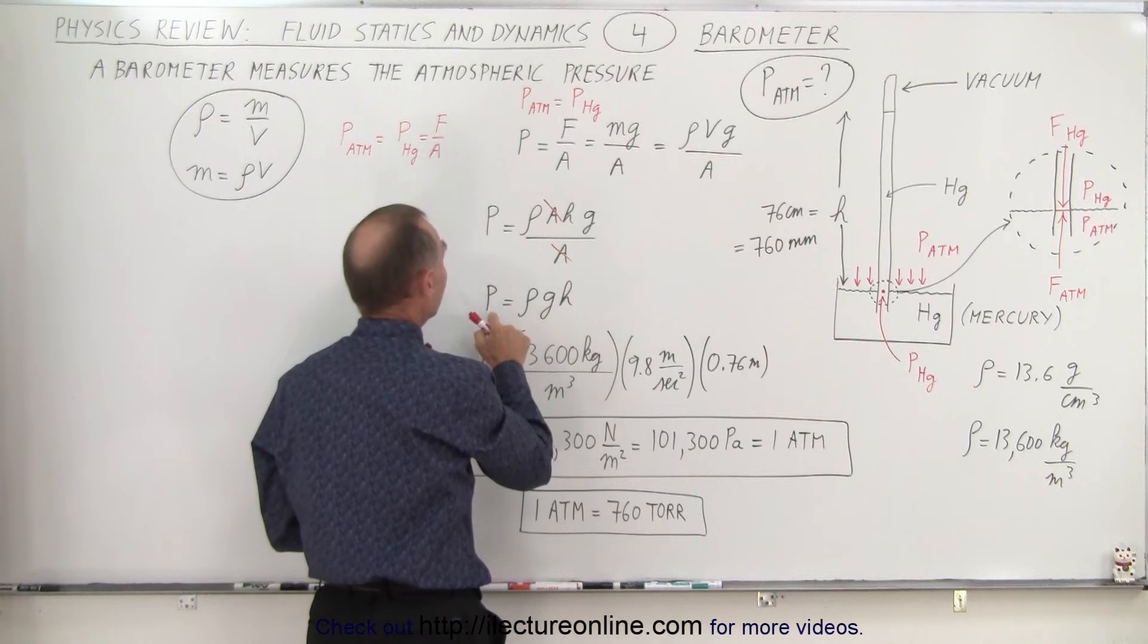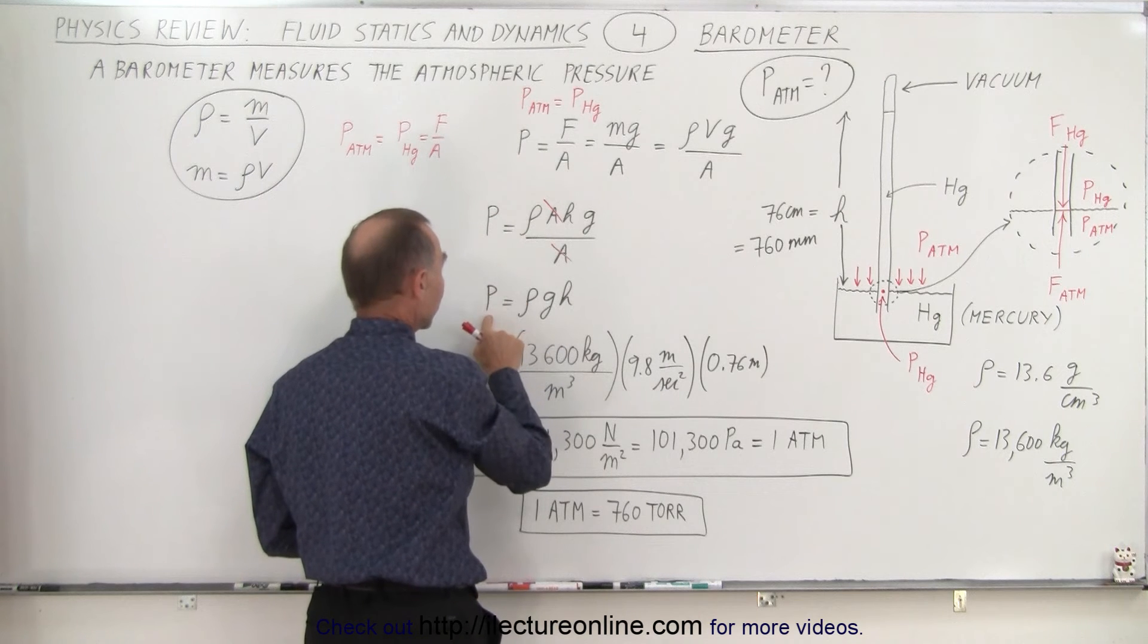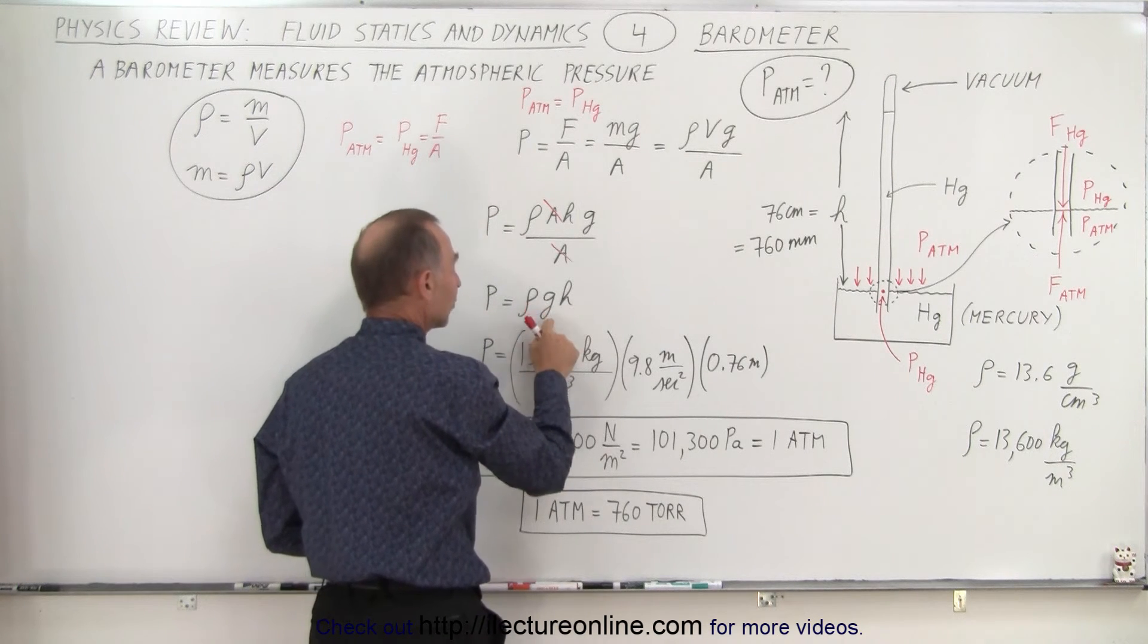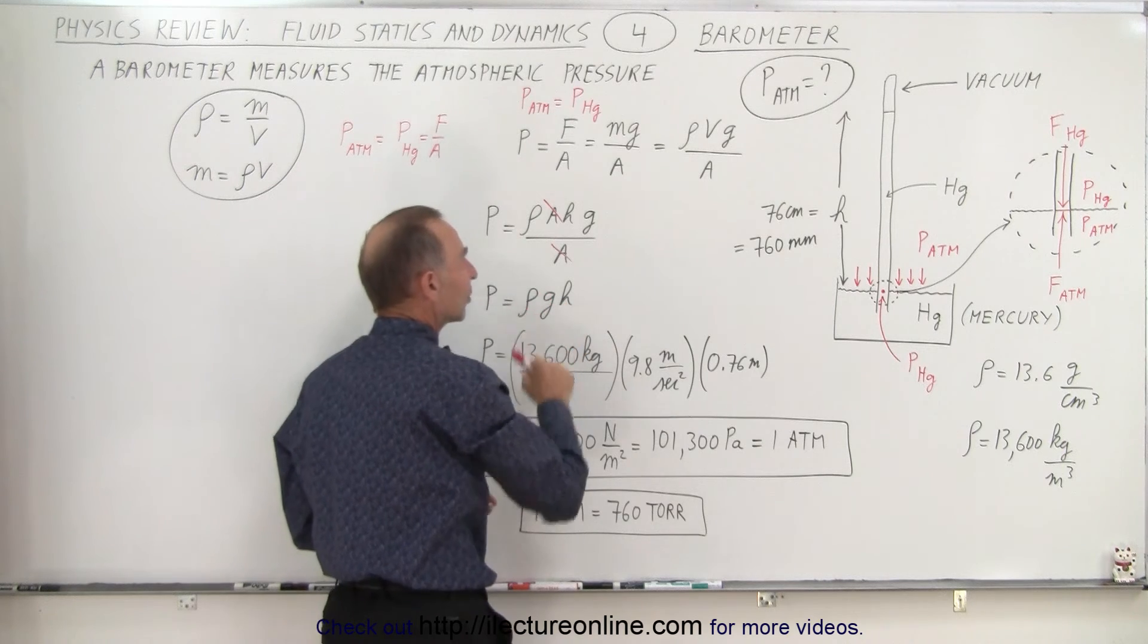And so we're left with the pressure, which is, in this case, the atmospheric pressure, will be equal to the density of the mercury times acceleration due to gravity, times the height of the column.